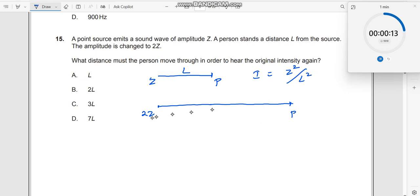In the second case, I' becomes 2Z the whole square, 4Z squared, divided by... I don't know what is this distance. Let us say x, x squared.